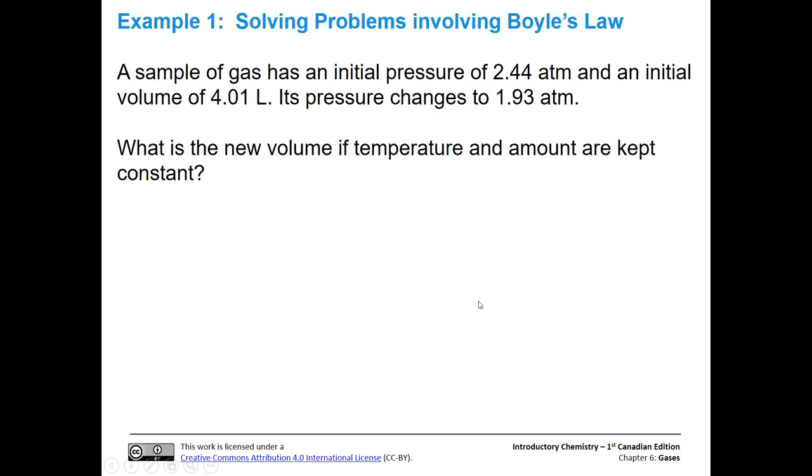So let's do an example showing how to solve problems using Boyle's law. So we have a sample of gas, and it has an initial pressure of 2.44 atmospheres, and an initial volume of 4.01 liters. And its pressure is going to change to 1.93 atmospheres. So we want to know what the new volume is, if the temperature and amount are kept constant. Before we go to the next slide, I just want to point out that if you really read the wording of this problem carefully, it's going to give you some of the, basically where to fill in the Boyle's law equation.